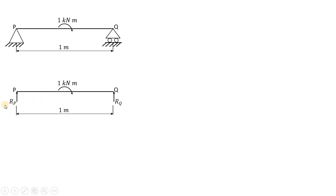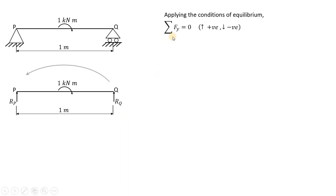To find out reactions RP and RQ, we will apply the conditions of equilibrium. The first condition is: summation of forces in the y-direction equals zero. Assuming upward forces as positive and downward as negative, RP and RQ are both assumed upward, so both are positive. Since there is no other load acting in the system, RP plus RQ equals zero.